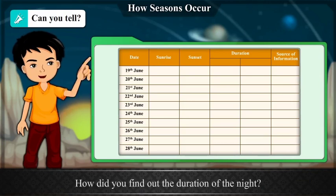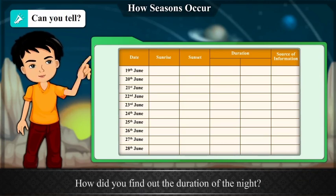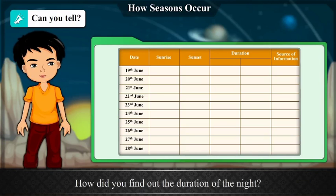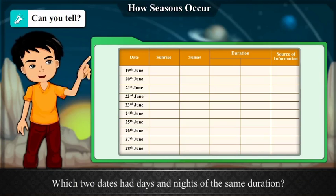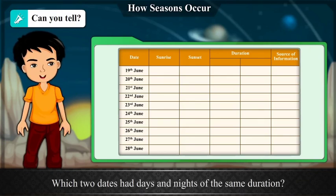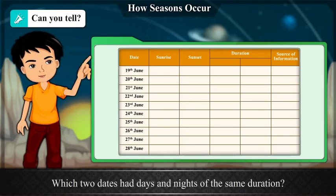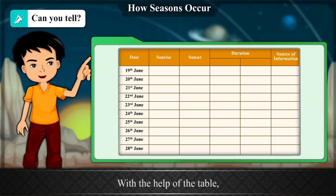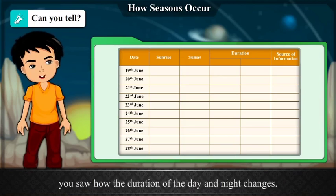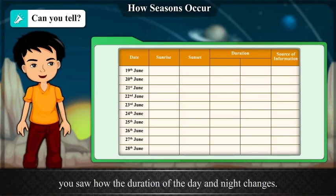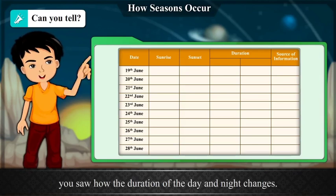How did you find the duration of the night? Which two dates had days and nights of the same duration? With the help of the table, you saw how the duration of the day and the night changes.